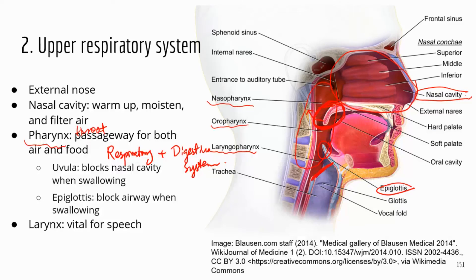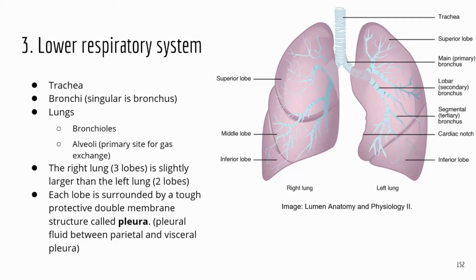After the pharynx, air goes through the larynx, which is known for speech — it contains the voice box and generates speech. Moving on to the lower respiratory system, which starts at the trachea. The trachea has ring-like structures made of cartilage that prevent it from collapsing, keeping your airway open so air can enter the lungs.